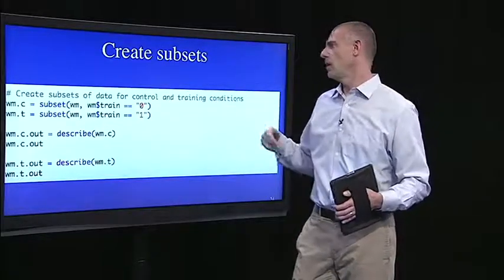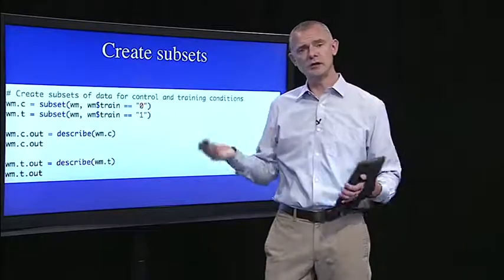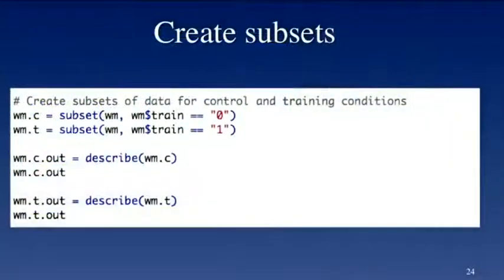So I'll just have two subsets. WM.C are people who didn't do any training. So in the data frame, that's a variable named train. And if train is zero, that means they didn't do any training. If train is one, that means they were in one of those four training conditions.